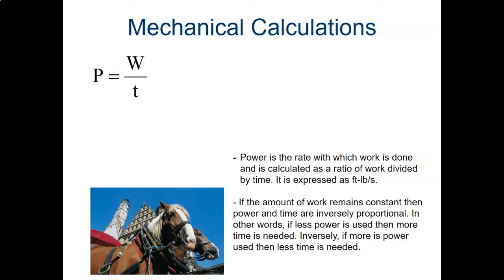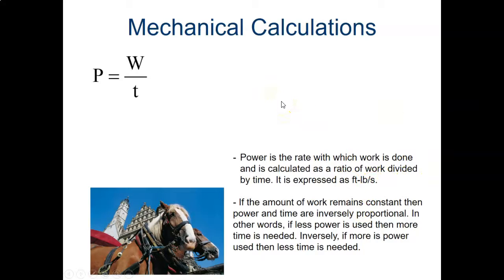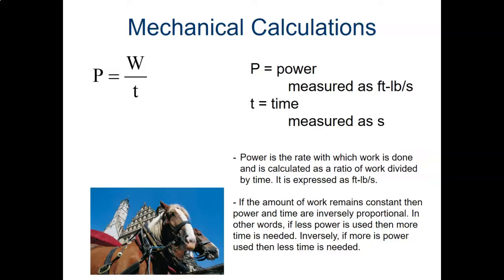After you calculate work, you have to calculate power. The formula for power is: uppercase P equals work divided by T, which is time. So power is the rate at which work is done, calculated as a ratio of work divided by time, and is expressed as foot-pounds per second. If the amount of work remains constant, then power and time are inversely proportional — if less power is used, more time is used; if more power is used, less time is needed. Power is measured in foot-pounds per second, and T is measured in seconds.